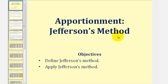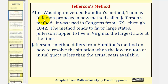Welcome to a lesson on Jefferson's method of apportionment. After Washington vetoed Hamilton's method, Thomas Jefferson proposed a new method called Jefferson's method. It was used in Congress from 1791 through 1842.